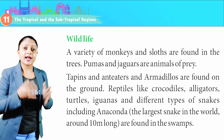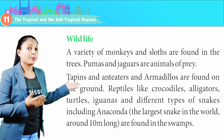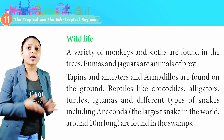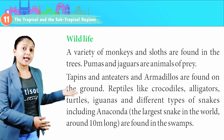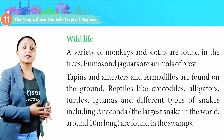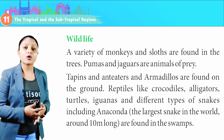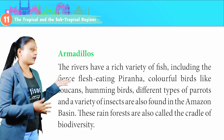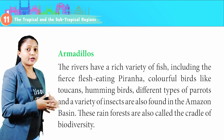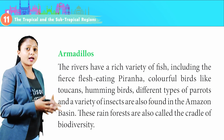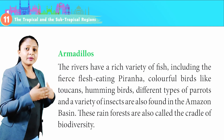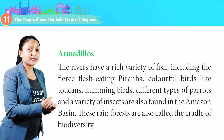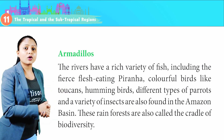Wildlife: A variety of monkeys and sloths are found in the trees. Pumas and jaguars are animals of prey. Tapirs, anteaters and armadillos are found on the ground. Reptiles like crocodiles, alligators, turtles, iguanas and different types of snakes including the anaconda — the largest snake in the world at around 10 meters long — are found in the swamps. The rivers have a rich variety of fish including the fierce, flesh-eating piranha. Colourful birds like toucans, hummingbirds, different types of parrots and a variety of insects are also found in the Amazon Basin. These rainforests are also called the cradle of biodiversity.